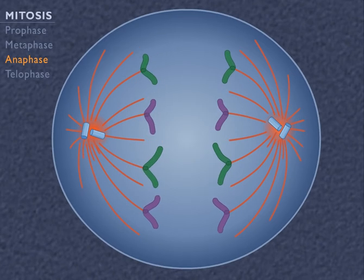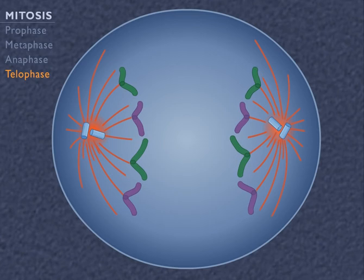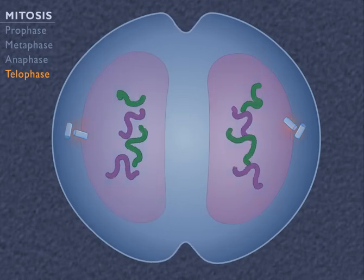In telophase, the two groups of chromosomes reach the opposite ends of the cell. As a new nuclear envelope starts to form around each group, the chromosomes uncoil and the spindle disappears.